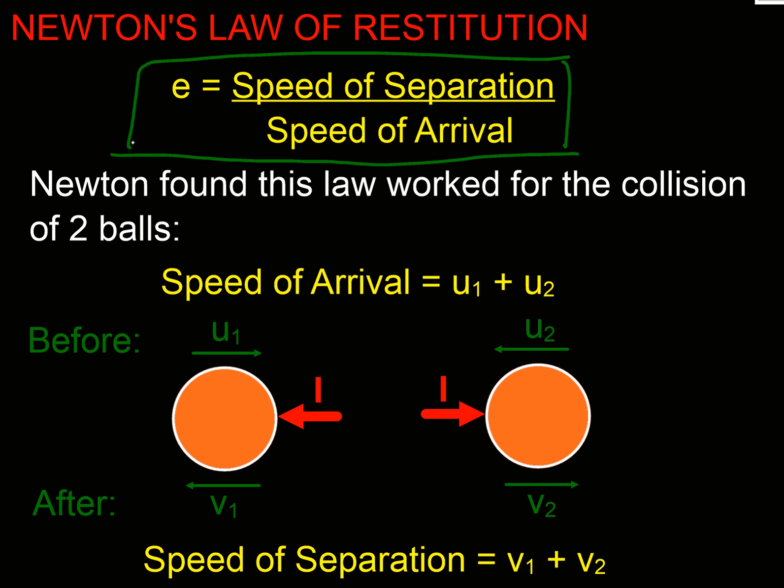I'm going to set this one up here so that the ball on the left, this is going to be unusual for me, because I usually like to have all my arrows for velocity going in the same direction. But to make this simpler for you to see, I've set them so they're going towards each other. So the left-hand ball is coming in at u₁, and the right-hand ball is coming in at u₂ before the collision.